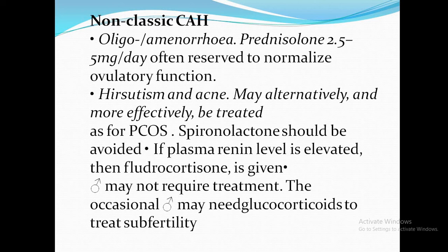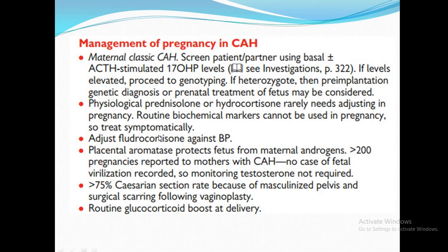In non-classical CAH, menstrual abnormalities such as oligomenorrhea or amenorrhea can be treated with prednisolone to normalize ovulatory function. Hirsutism and acne can be treated as in PCOS — do not use spironolactone here. If plasma renin is elevated, it indicates inadequate aldosterone, so fludrocortisone should be added. Males may not require treatment but might need glucocorticoids in pregnancy.